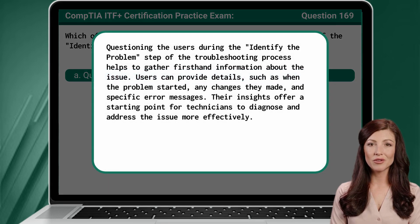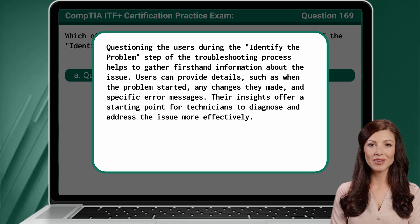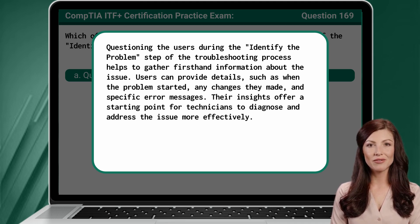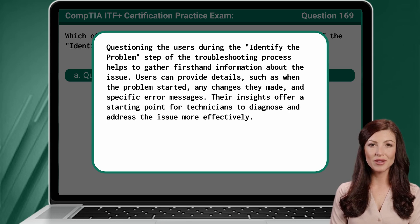Questioning the users during the identify-the-problem step of the troubleshooting process helps to gather first-hand information about the issue. Users can provide details such as when the problem started, any changes they made, and specific error messages. Their insights offer a starting point for technicians to diagnose and address the issue more effectively.